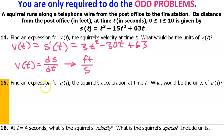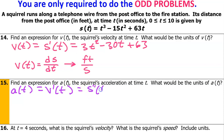For number 15, they want us to find an expression for a(t), the squirrel's acceleration at time t. We know that acceleration is the derivative of velocity, which is also the second derivative of position. We're doing the derivative of the velocity function. So by the power rule, this is going to be 6t minus 30.